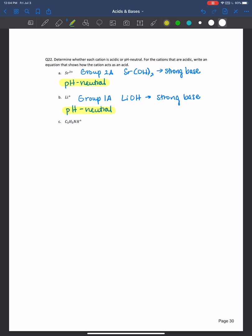And then finally, we see this ion here in this cation. And that doesn't look like a group 1A or group 2A cation. So we can assume it's most likely a weak acid. It's also not a small, highly charged metal cation. So this must be the conjugate acid of a weak base. And therefore, it must be acidic.